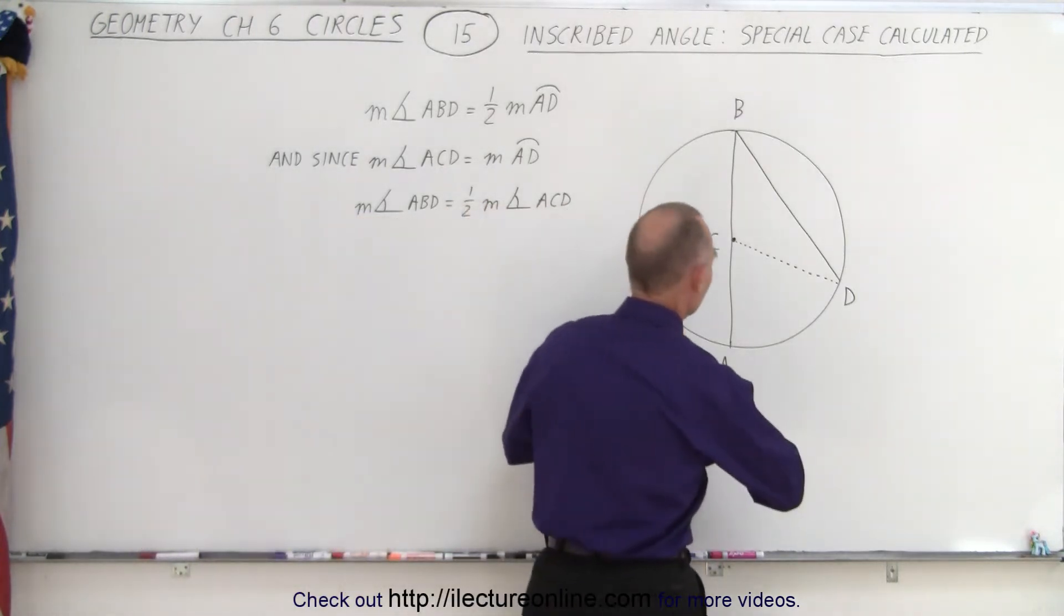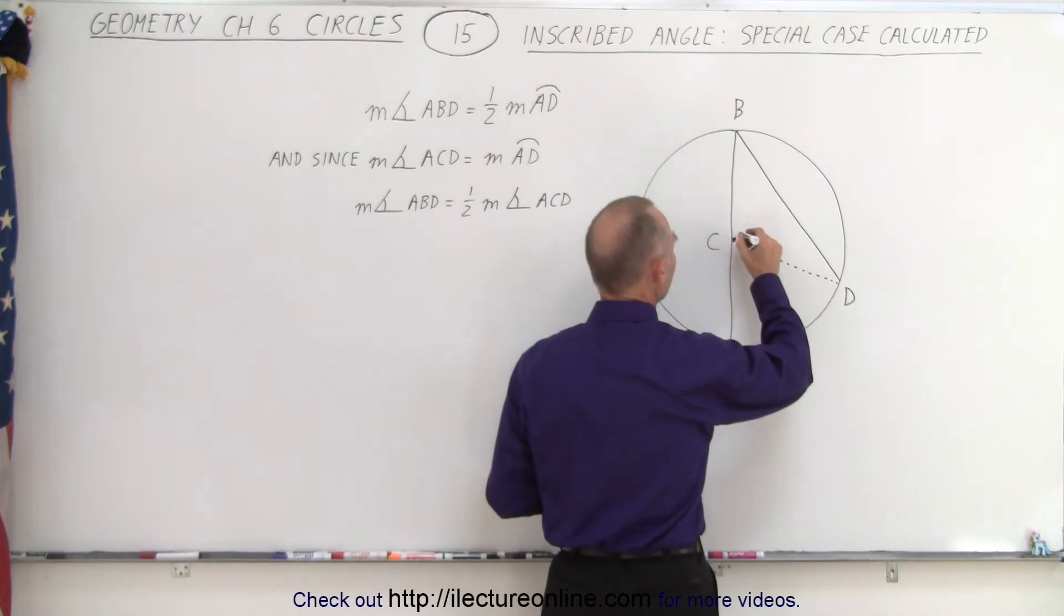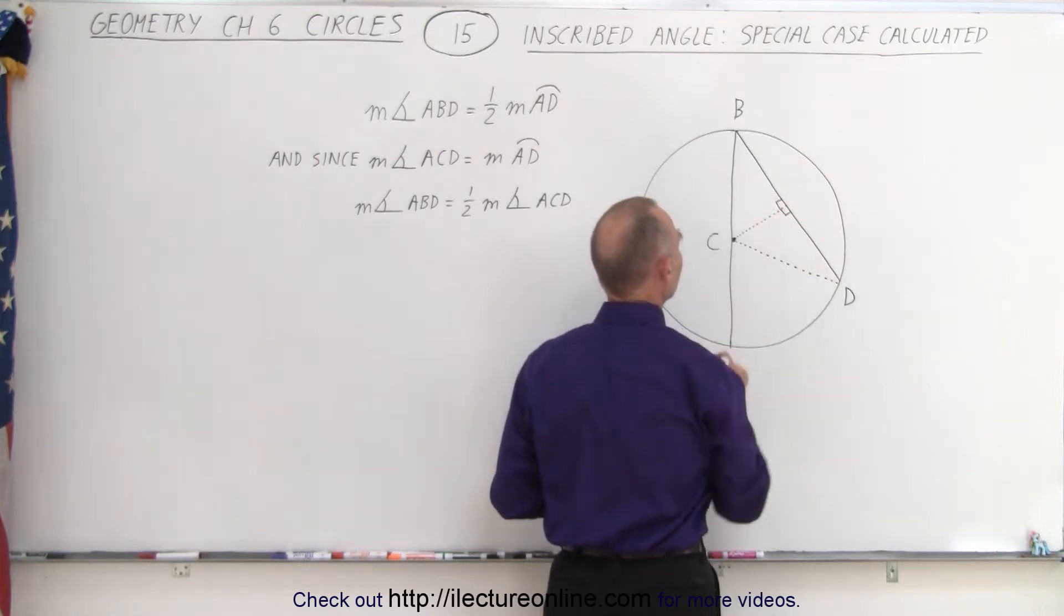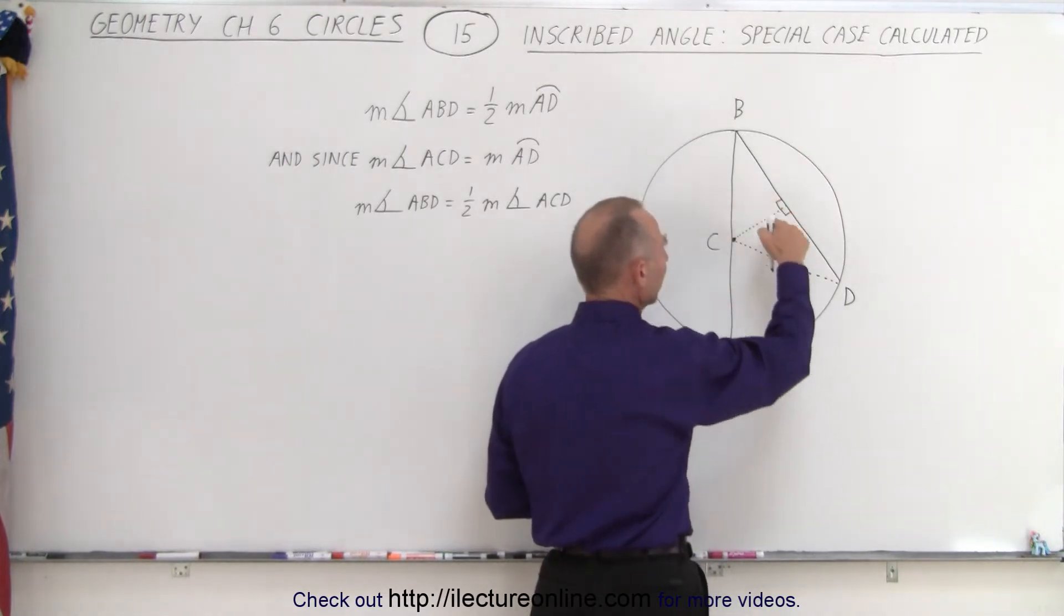So what we're going to do first is we're going to draw a line that's perpendicular to this chord right there so we know that this angle here is 90 degrees and this angle here is 90 degrees. And notice we now have two congruent triangles.